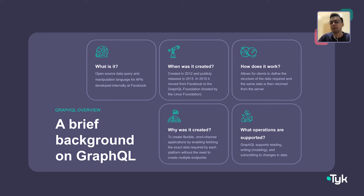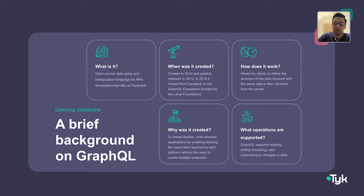To enable that flexibility, GraphQL came into existence to support flexible omni-channel applications by fetching exactly the data required by each platform, without needing to create multiple endpoints. GraphQL supports three operations: queries — reading or requesting data; mutations — writing or changing data; and subscriptions — subscribing to changes in data.